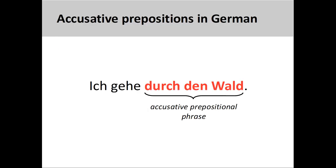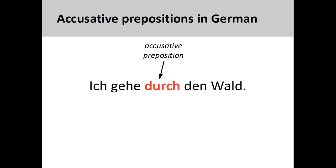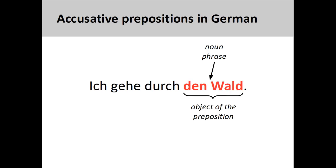In an earlier presentation, we saw that an accusative prepositional phrase has two parts. The first part was the preposition itself. The second part was the object of the preposition, which was in the accusative case. Here the object of 'durch,' meaning 'through,' is the noun phrase 'den Wald,' meaning 'the forest,' with the definite article 'den' indicating the accusative case.